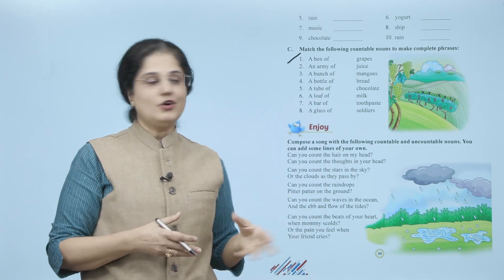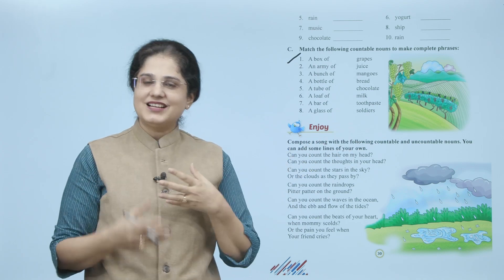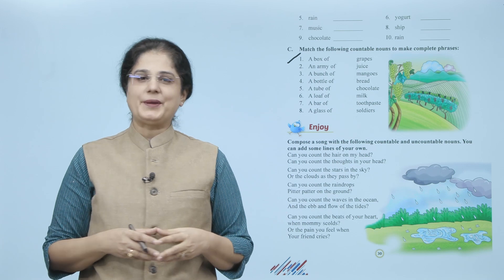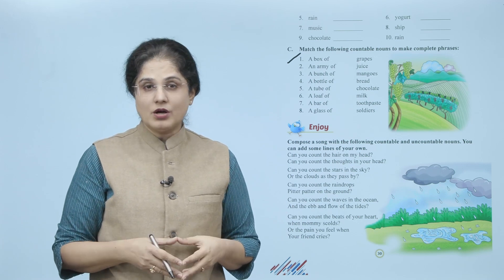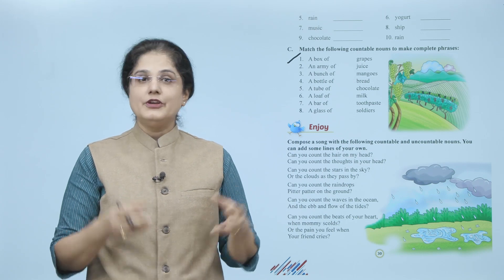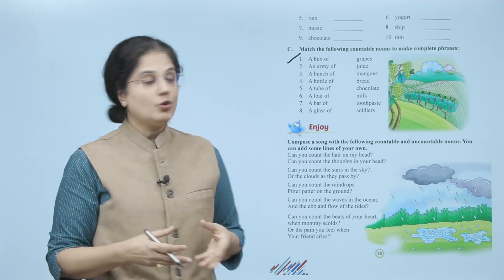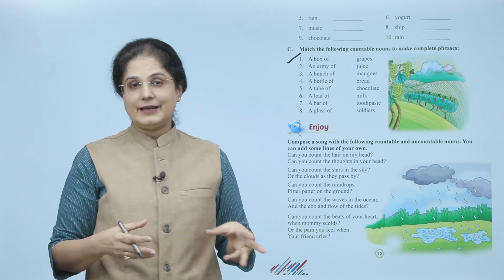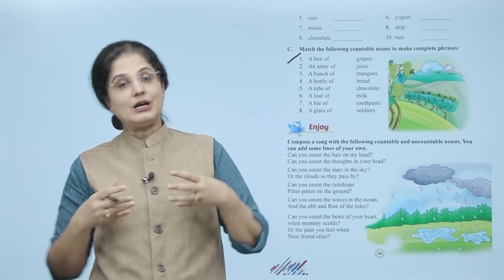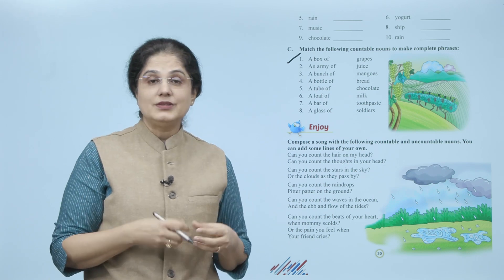Now let's enjoy - compose a song with the following countable and uncountable nouns. You can add some lines of your own. Toh yeh jo ek song diya gaya hai, is mein aap kuch aisi lines add karein jis mein aap countable ya phir uncountable nouns ke saath sentences banayenge ya lines banayenge. Abhi kya song diya gaya hai: